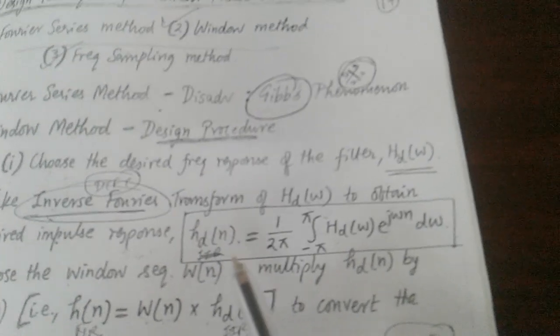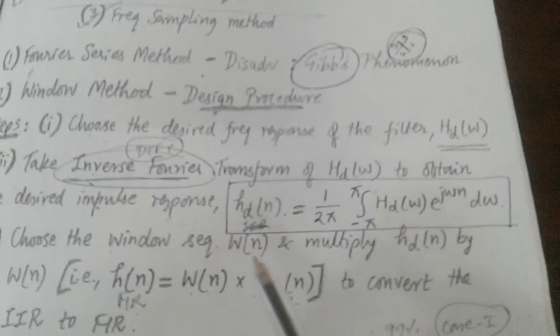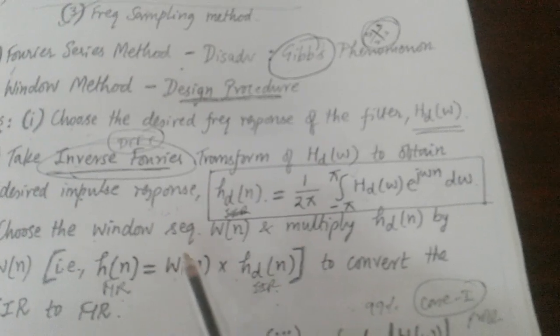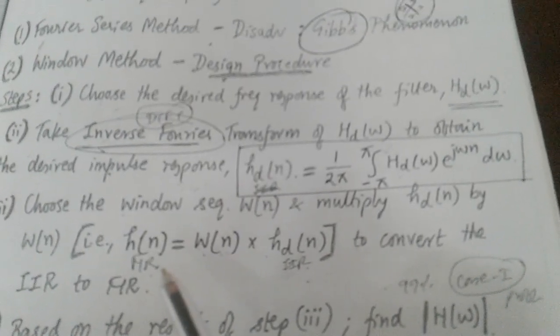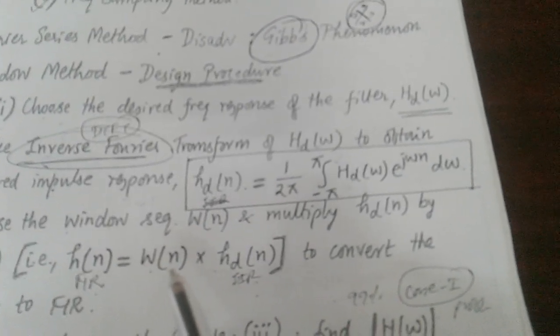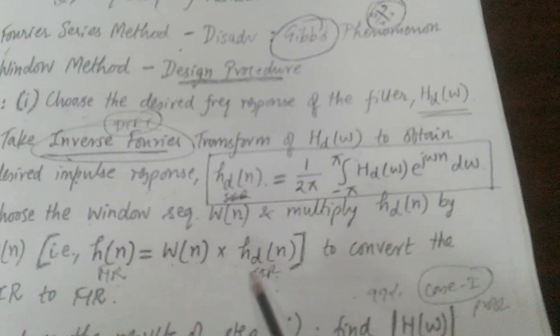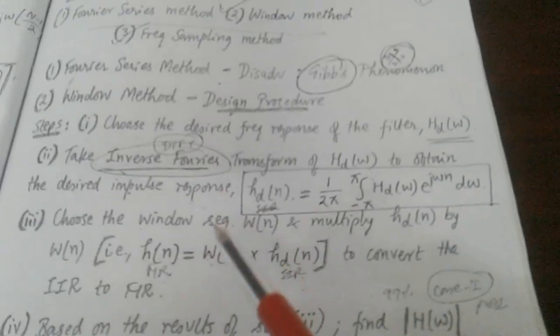Here in step 2, we get an IIR filter result. To convert it to a FIR filter, we choose a window sequence and multiply it with HD(n), thereby obtaining a FIR filter. So H(n) = W(n) · HD(n), where W(n) is the window sequence.